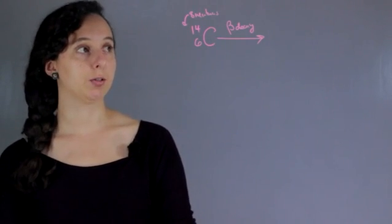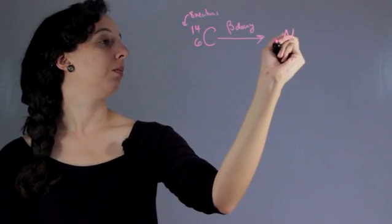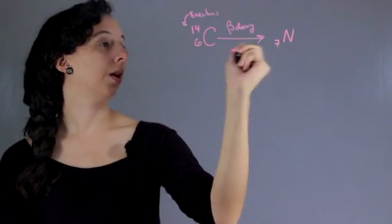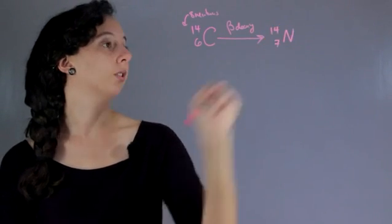So in beta decay, it basically promotes the atomic number up by 1, so into 7, which is nitrogen, and it still has 14 neutrons.